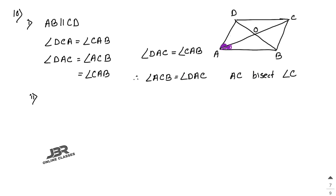For part 2: since AC bisects angle A and also bisects angle C, angle A = angle C. This means ABCD is a rhombus. For part 3: prove AC is perpendicular to BD. Since ABCD is a rhombus and AC and BD are its diagonals, and the diagonals of a rhombus bisect each other at right angles, therefore AC is perpendicular to BD. Proved.